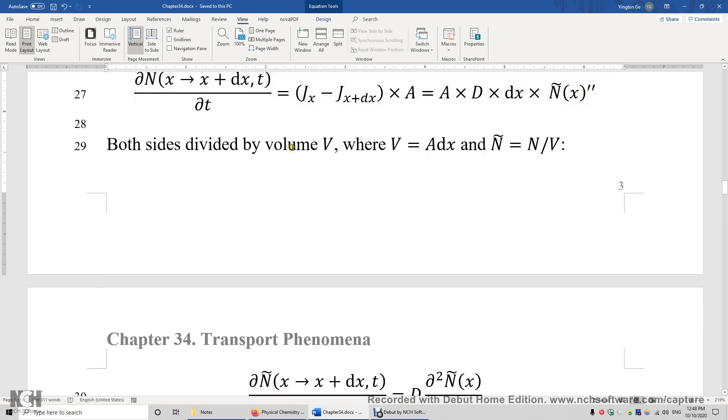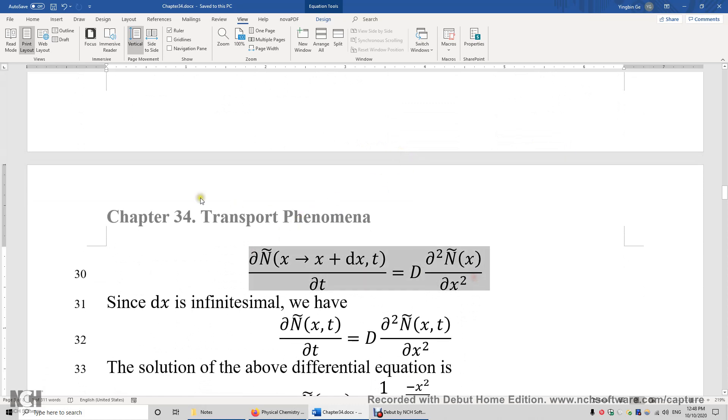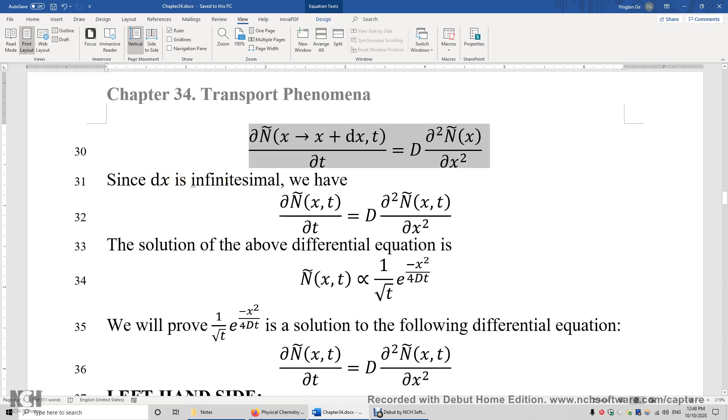Both sides divided by the volume of the container. This volume is A times dx. And then remember, ṅ is the number density, the number of particles over the volume. So we got this equation. Because dx is infinitesimal, so we can replace the density of the volume with the density at position x. We assume the density at position x is the same as the density inside the box.